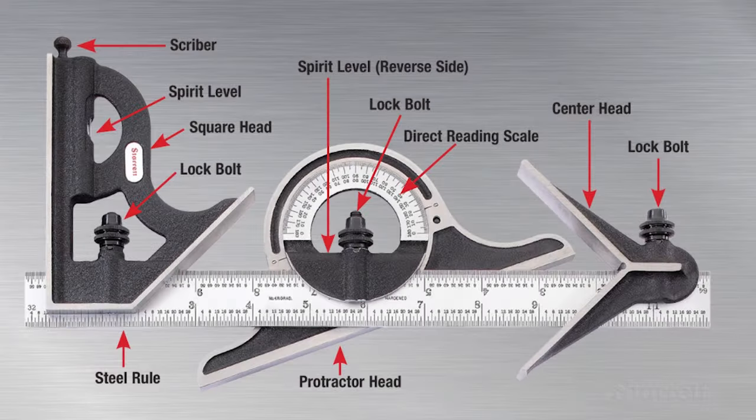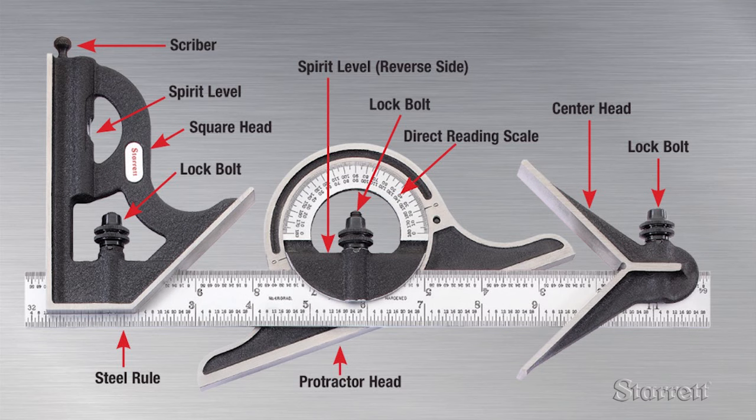While used most commonly in woodworking, a combination square set with interchangeable square, center, and protractor heads is also a versatile tool in metalworking.